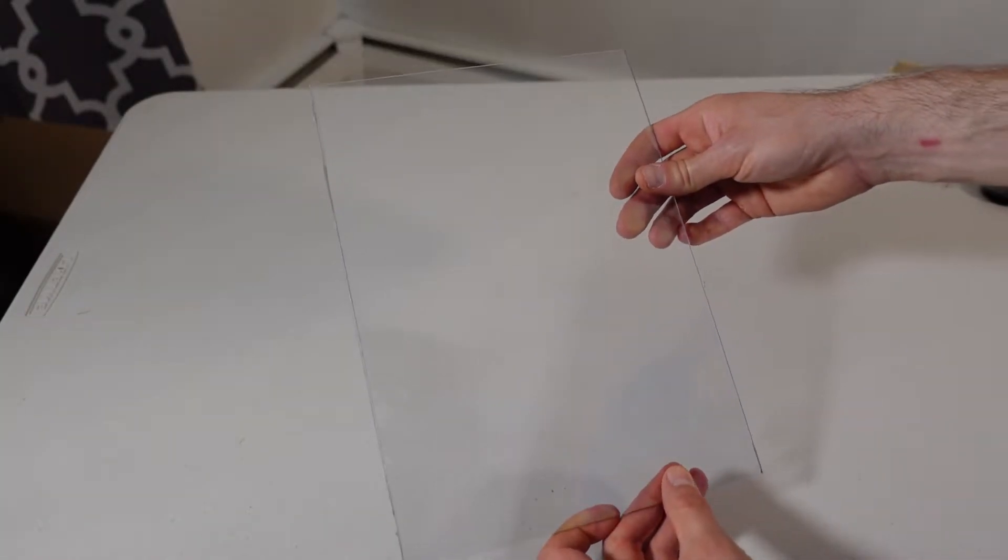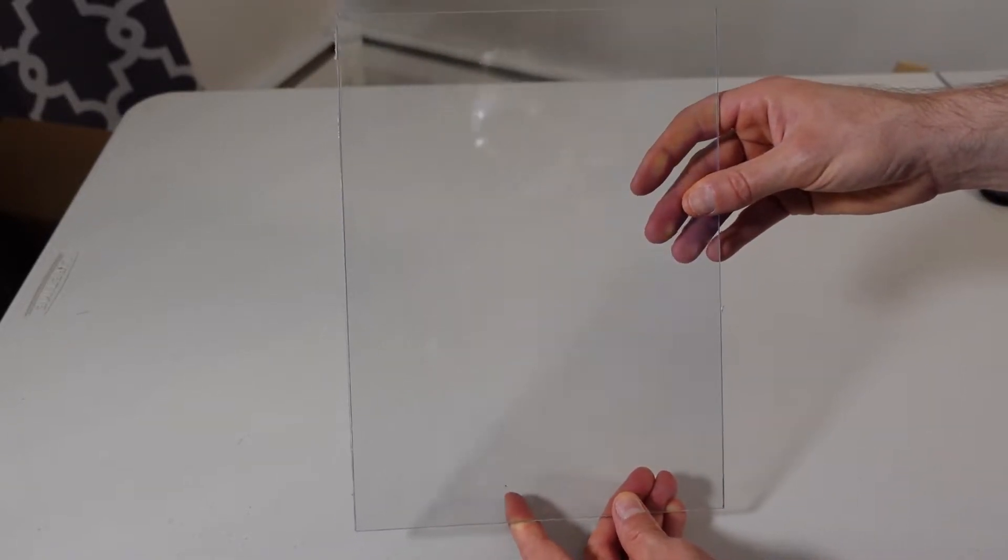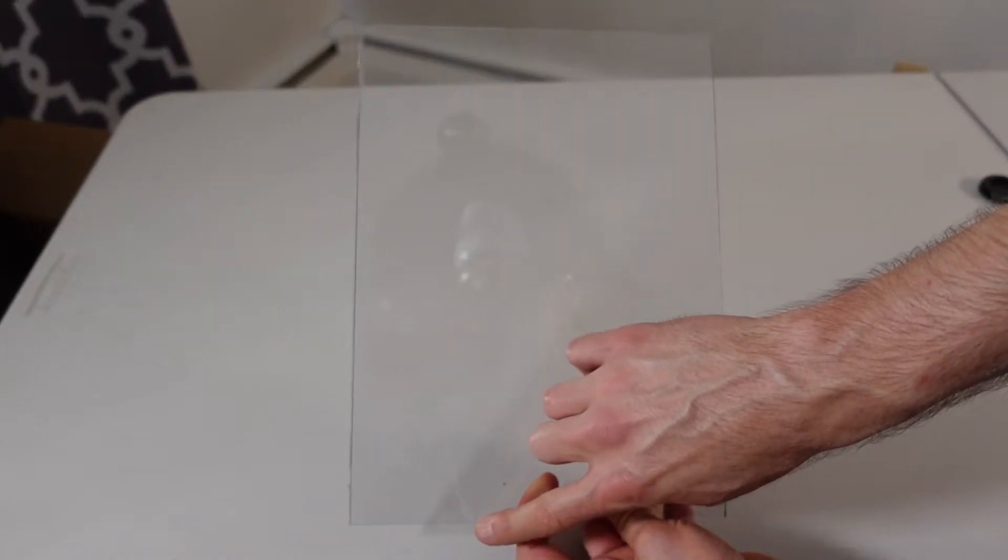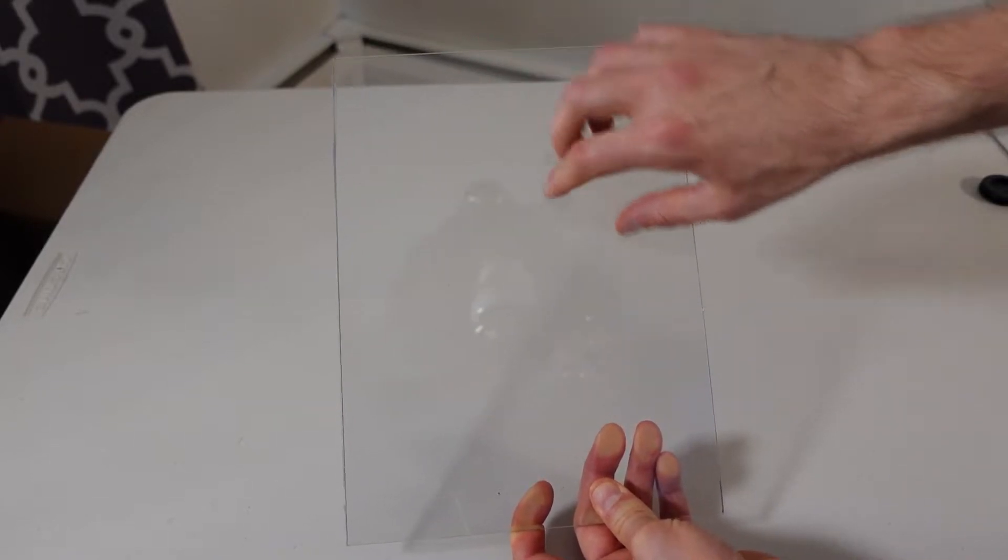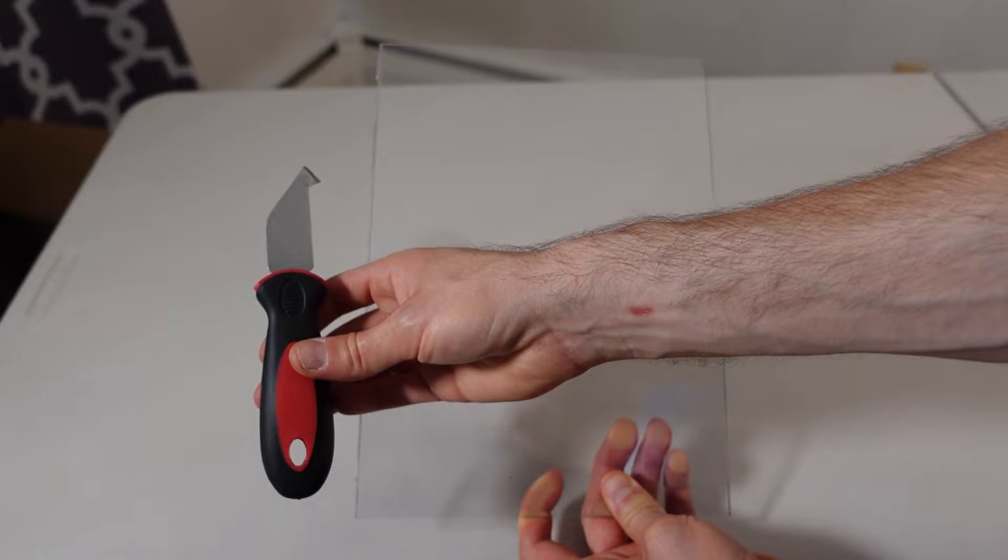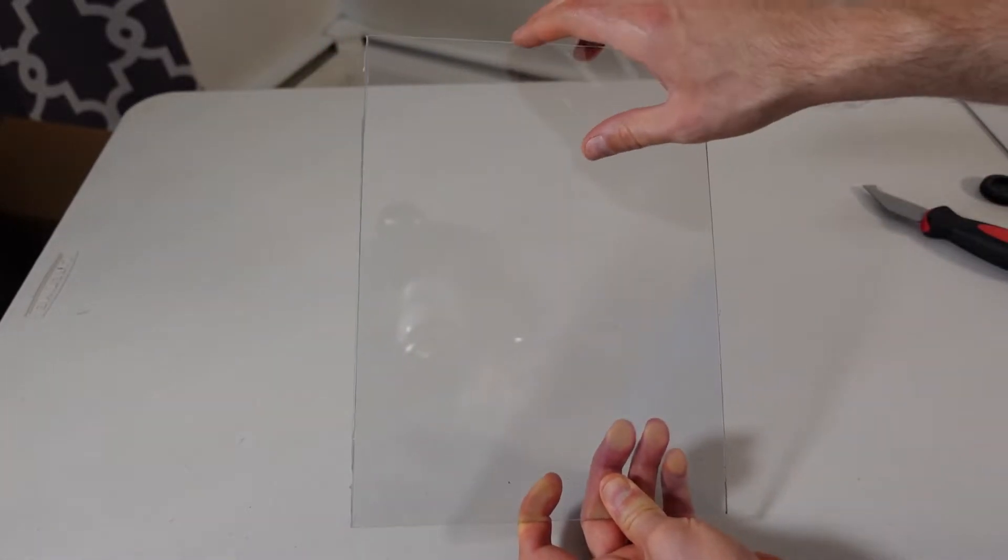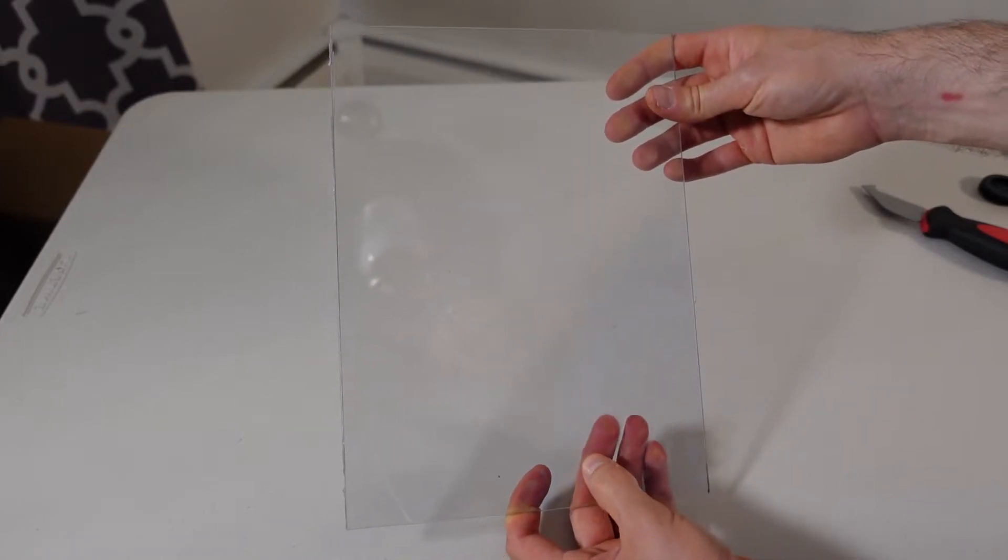So this is the polycarbonate sheeting after I got done cutting it. I essentially took this sheet which is exactly 12 inches wide and it was a longer length. And I just used this scoring utility knife to score this way and just cut it to the length, because the width was already the same exact width as the basement window. So that worked out perfectly.